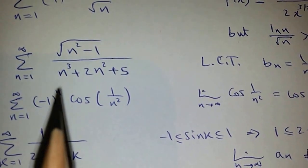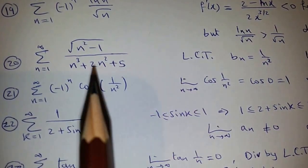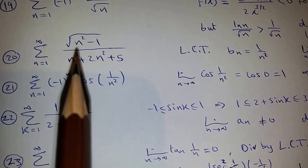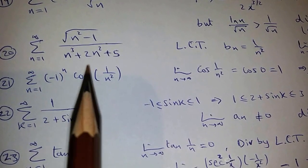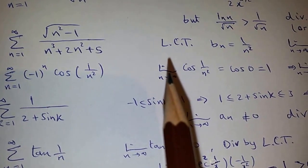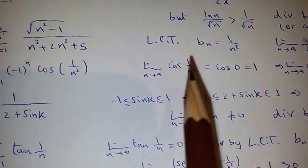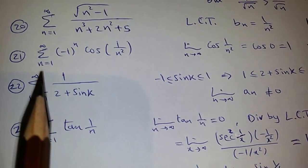Now let us look at this one. Using the limit comparison test with 1/N², because the highest power in the numerator is N and in the denominator N³, so N/N³ gives 1/N². Use the limit comparison test to find the limit of A_N over B_N. It would be 1, which is greater than 0, and since this converges, this series converges — absolutely convergent.